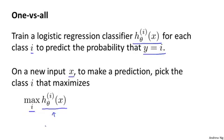and we then pick the class i that maximizes the probability. So we basically pick whichever one of the three classifiers is most confident or most enthusiastically says that it thinks it has the right class. So whichever value of i gives us the highest probability, we then predict y to be that value.